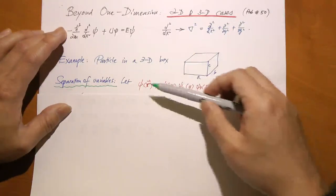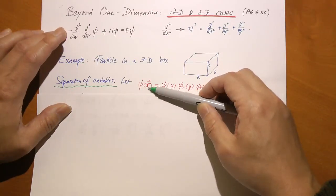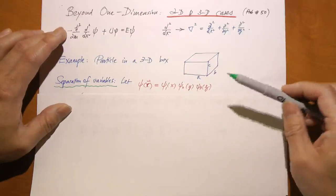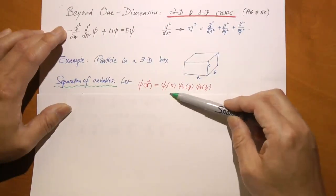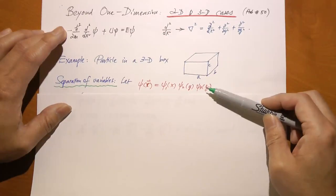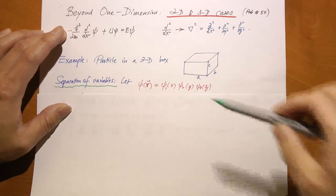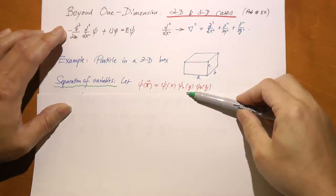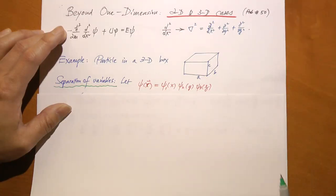We assume that psi(R), the space part of the wave function, can be written as the product of psi1, psi2, psi3, where psi1 depends only on x, psi2 only on y, and psi3 only on z. Now there is no guarantee that this works, but let's hope for the best. How do we know it's right or wrong? We plug this into the three-dimensional Schrödinger's equation to see if it actually works.